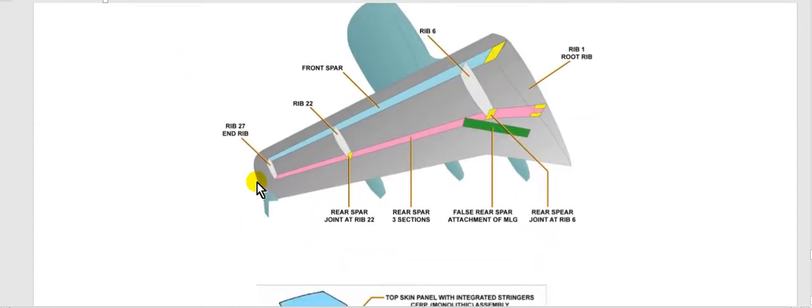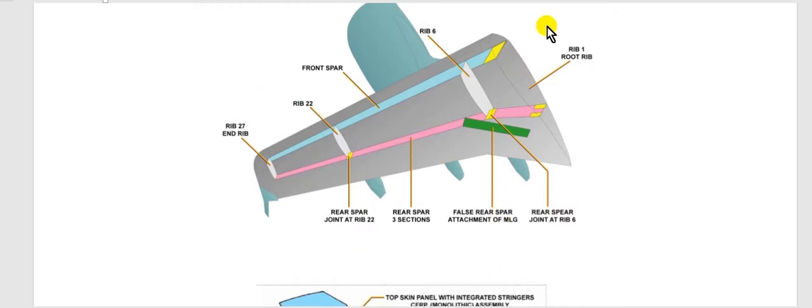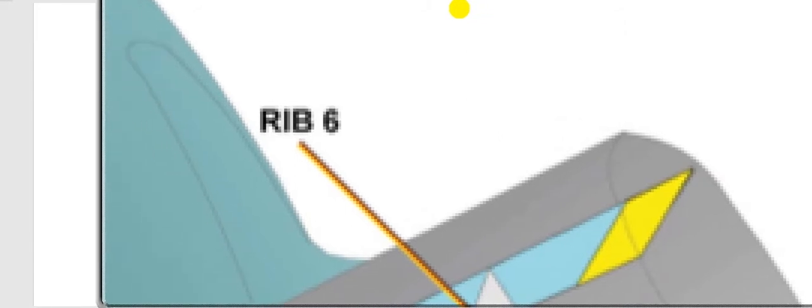Look at this figure. This is the wing. This is the front spar, and this is the rear spar. Here are the ribs — rib 6, rib 22, rib 27. Rib 1 is at the root, and the rib number increases as you go toward the tip.